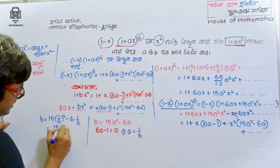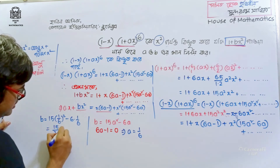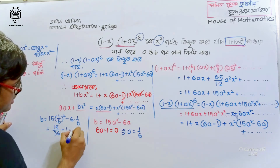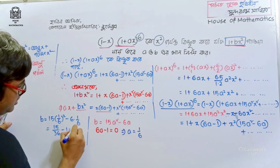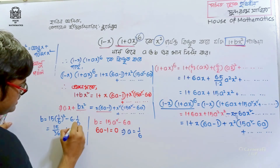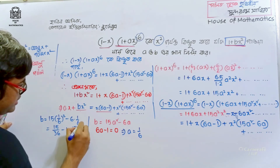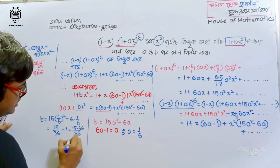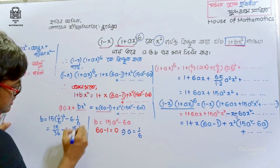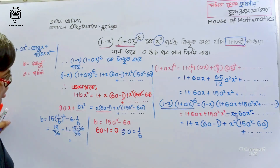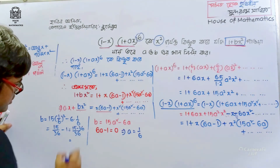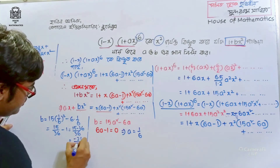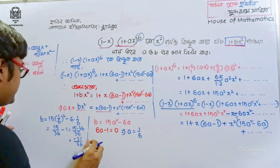That means 15 by 36 minus 1, which gives us 15 minus 36 divided by 36, which is minus 21 divided by 36.